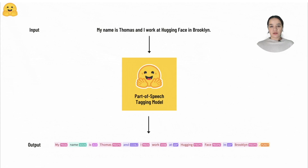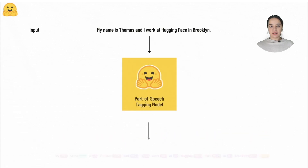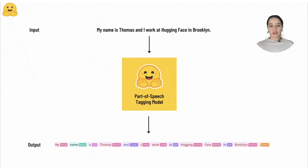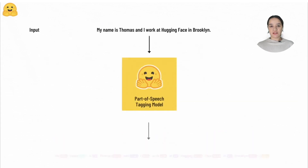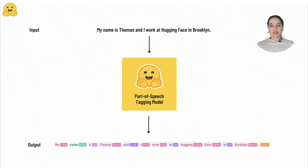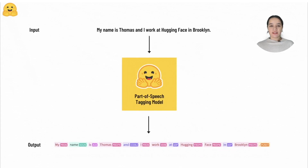Another token classification task is part of speech tagging. The goal of this task is to label the words for a particular part of speech, such as noun, pronoun, adjective, verb, and so on. This task is formulated as labeling each token with parts of speech.